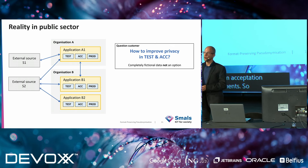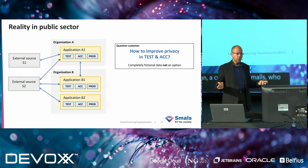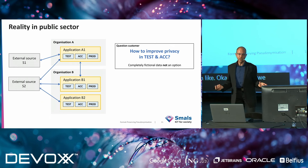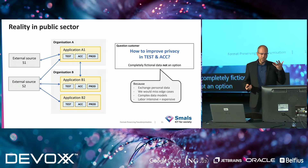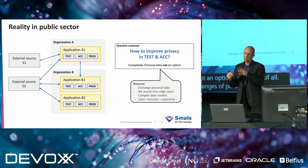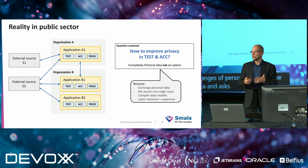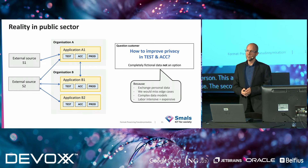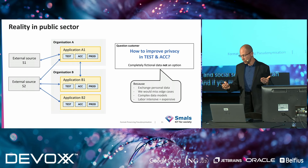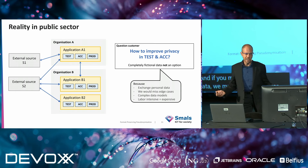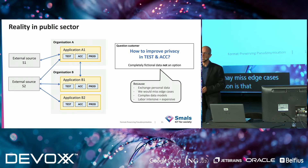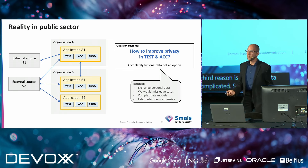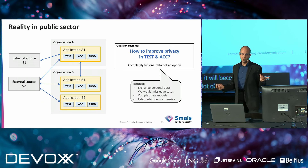There was a public sector organization, a customer of SMALS, who came to us with the question: how can we improve privacy in test and acceptation environments, under the assumption that completely fictional data is not an option? Why not? First, there are exchanges of personal data — if one application uses fictional data and asks another service about that fictional person, it will not be able to reply. Second, the rules in the public sector can become quite complicated, and fictional data may miss edge cases. Third, our data models are complex, making it very labor-intensive and costly to create purely fictional data.